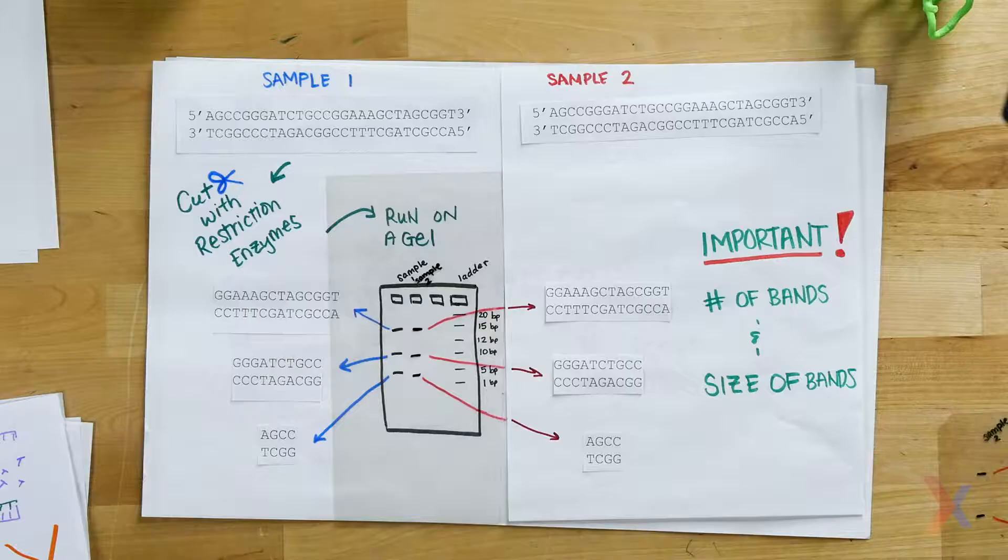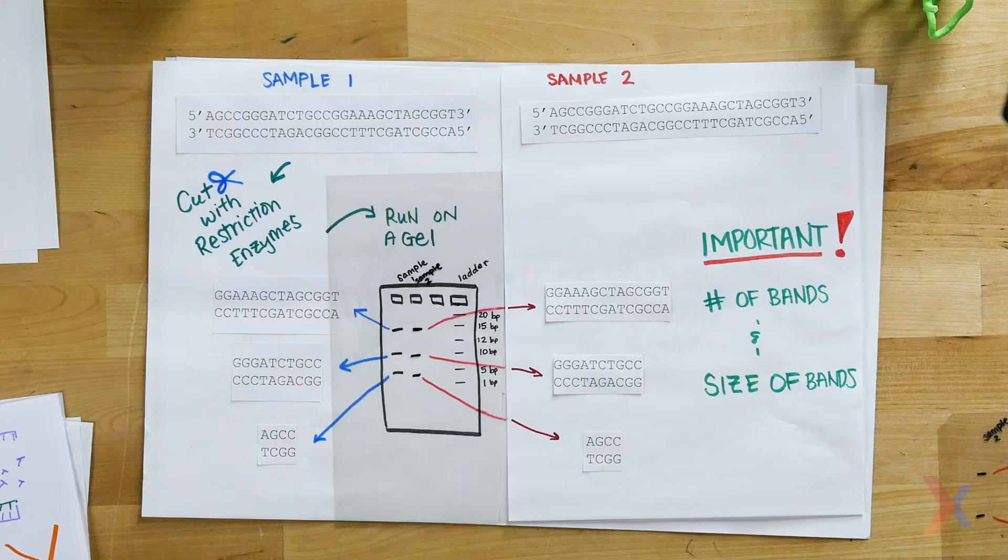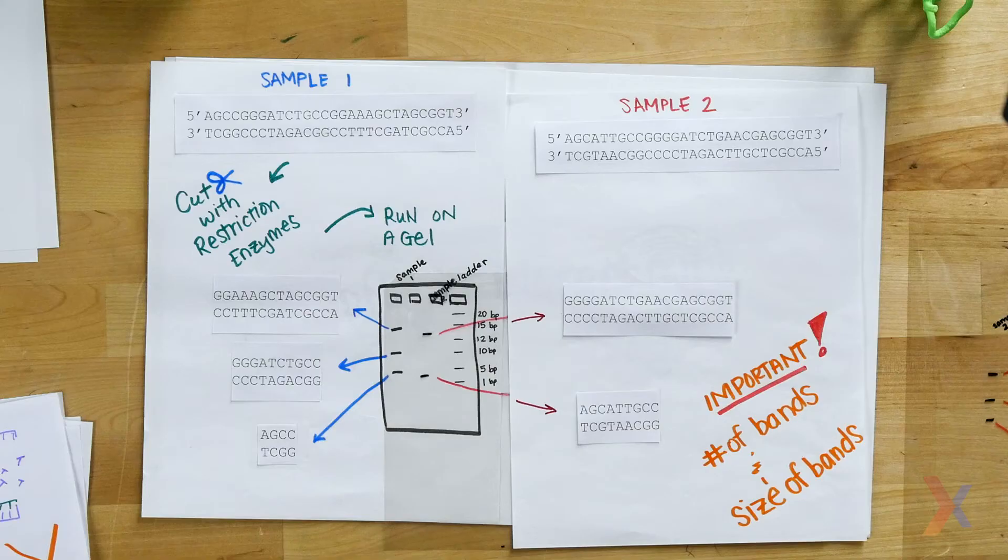If you have two samples and the samples have the same number of fragments and the same fragment sizes, you can tell they came from the same person. That banding pattern, though, if it looks different—if there's a different number of fragments or the fragments are different sizes—then you might say these pieces of DNA came from different people.